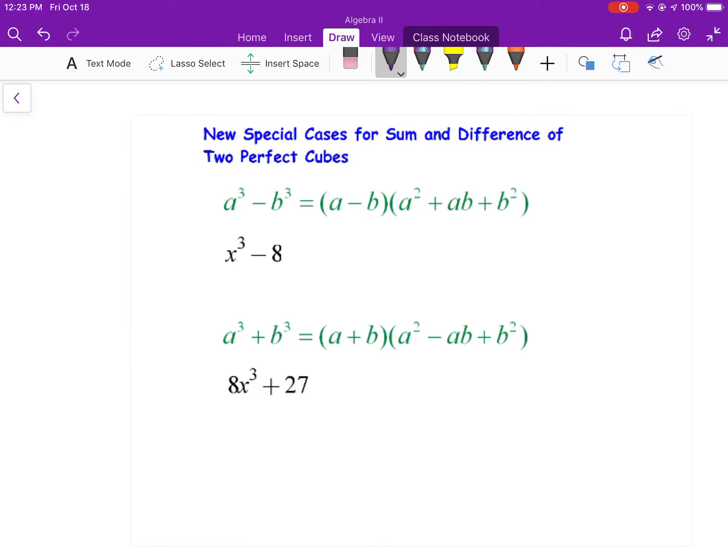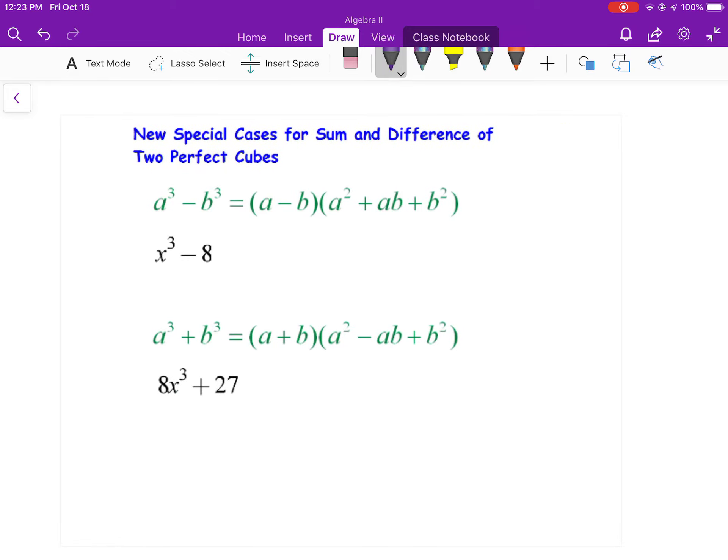Now, a couple of new patterns would be these two special cases. One that is the difference of two perfect cubes. Now, perfect cubes would be anything you could take the cube root of and get a whole number, just like perfect squares. 1, 8, 27, 64, 81. Okay, just to kind of name a few. I take that back on 81. I'm not so sure about that one.